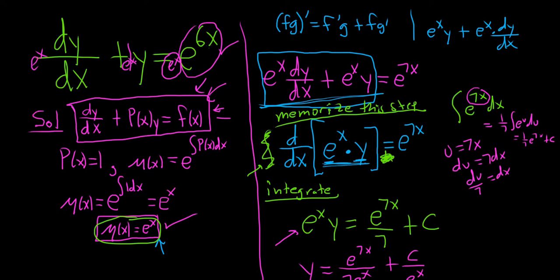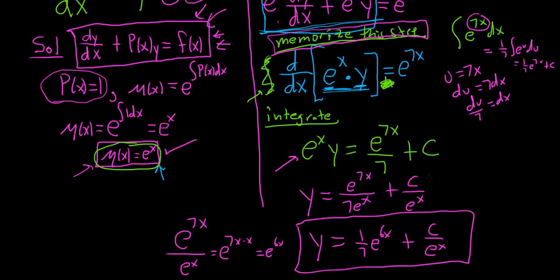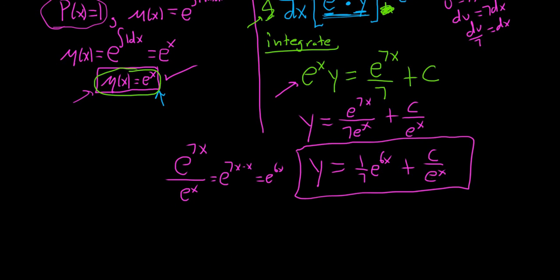As a quick recap: first, make sure your equation looks like standard form; next, find your P(x) — whatever is in front of y — and compute your integrating factor; then multiply your entire differential equation by the integrating factor; then memorize this step — it's always d/dx of μ times your unknown function; then integrate and finish.